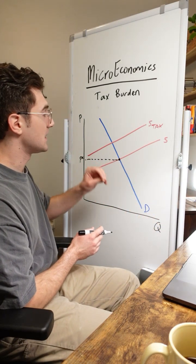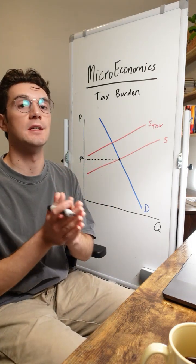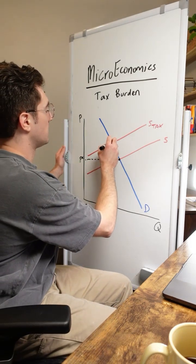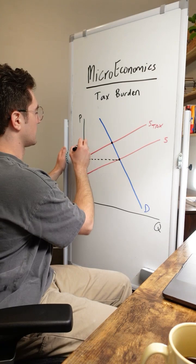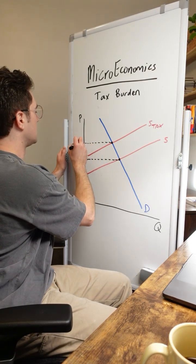Now with that being said, we got to understand next what the new price of this good is. That's going to be the intersection of the demand and supply plus tax curves. Draw a little line over here. We'll call this PT for tax.